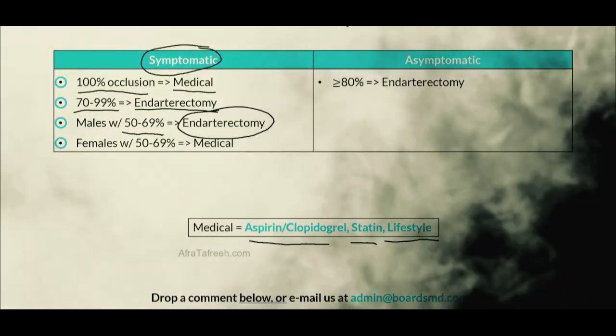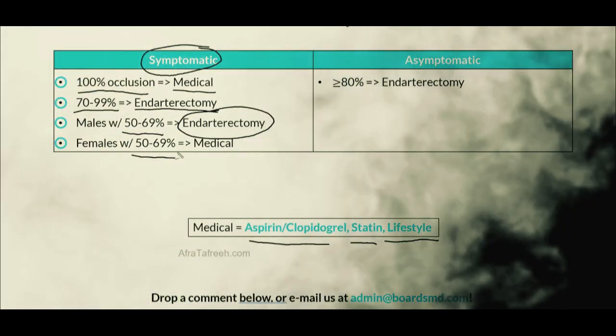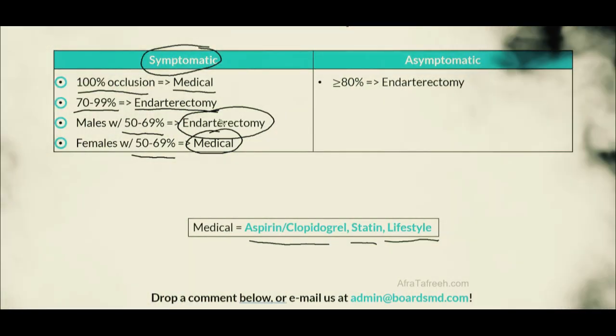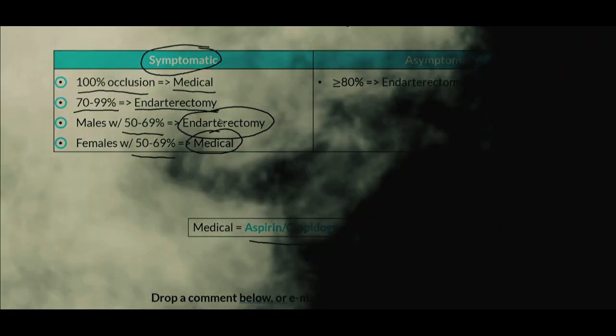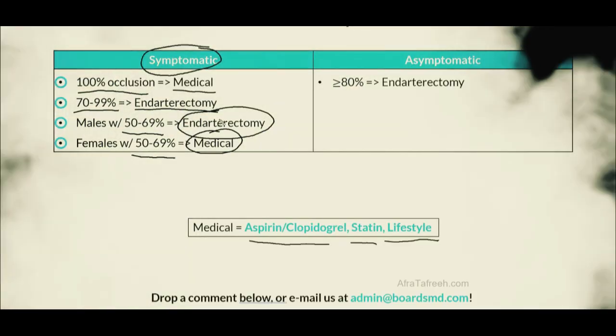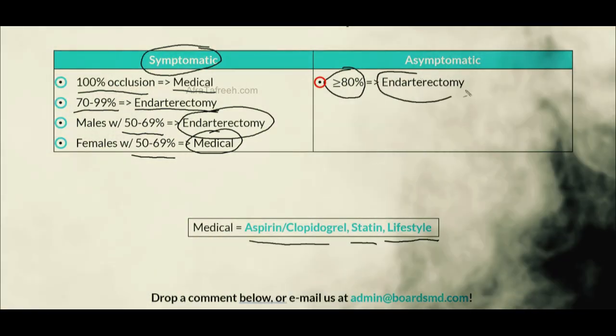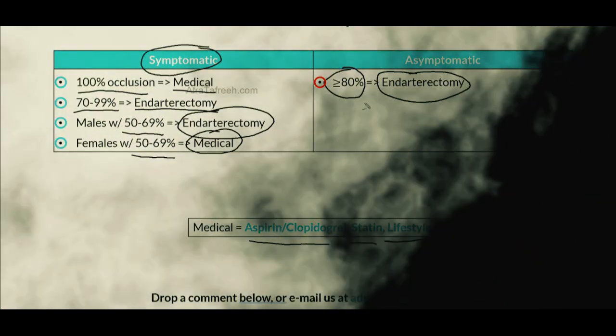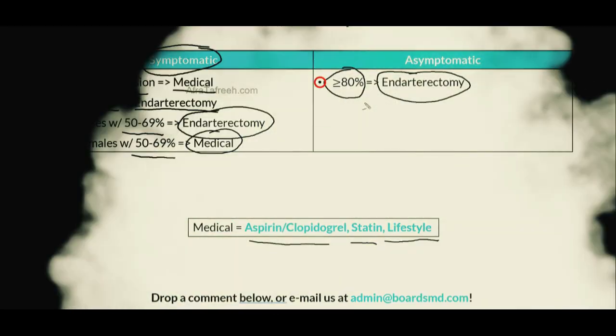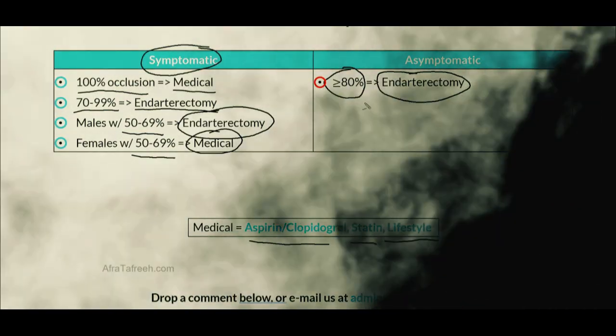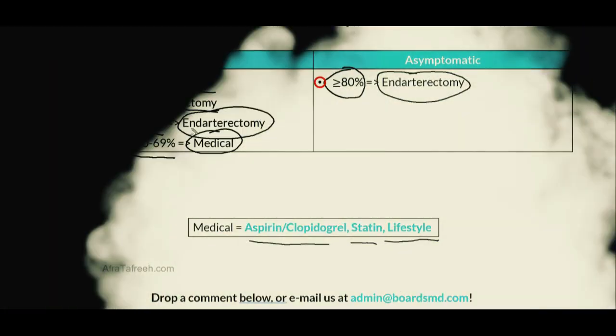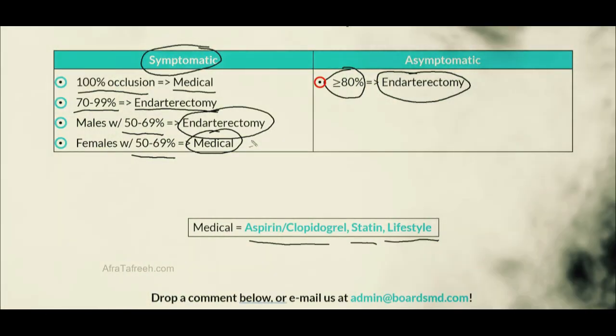However, for female patients who are symptomatic with the same level of carotid stenosis — 50-69% — these female patients should receive medical therapy. In contrast, for asymptomatic patients with carotid stenosis, if they have at least 80% stenosis, we should proceed with an endarterectomy. Those who are asymptomatic and have less than 80% occlusion are generally not going to be candidates for surgery. Understanding these cutoffs, including the distinction between management of males and females depending on their level of carotid stenosis, will be very important for your examinations.